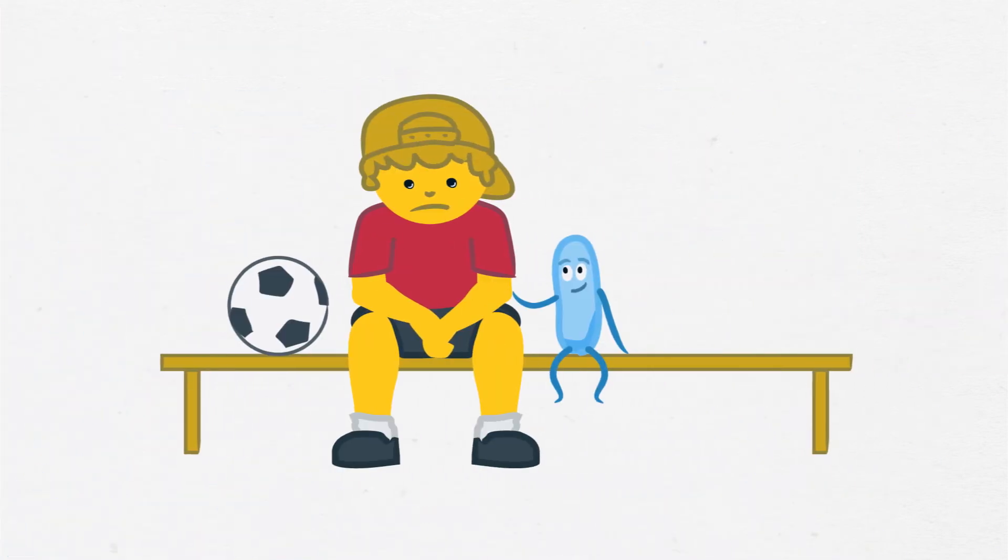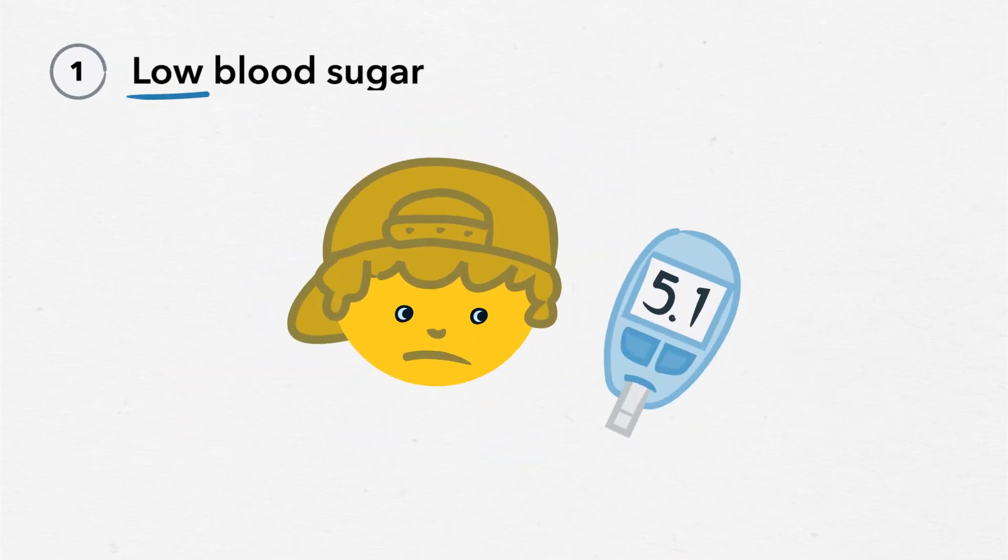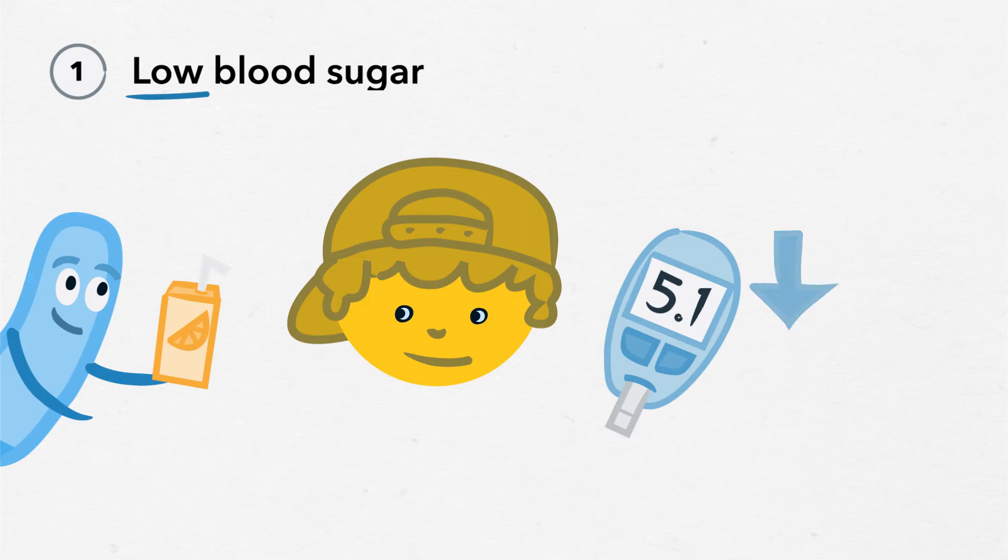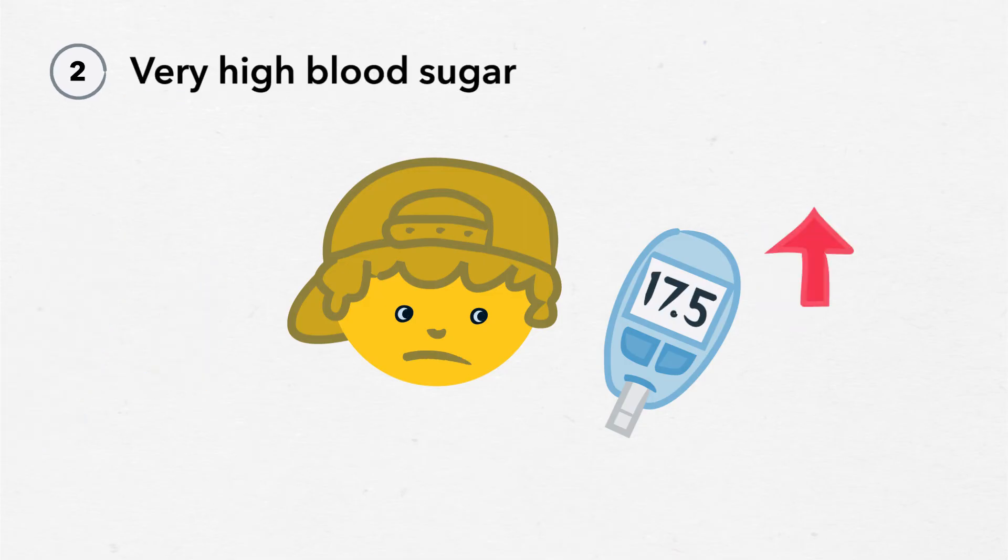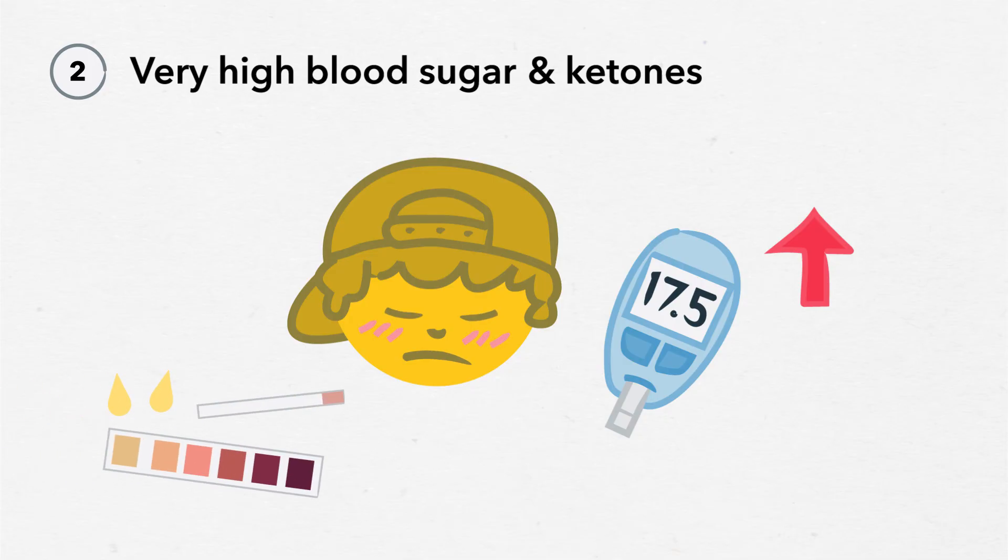There are only two reasons to delay or limit physical activity for a student with diabetes. First, when they have low blood sugar. This must be treated before starting the activity. Second, when a student's blood sugar is very high and when a urine or blood test shows that they have ketones. This can be a sign of illness.